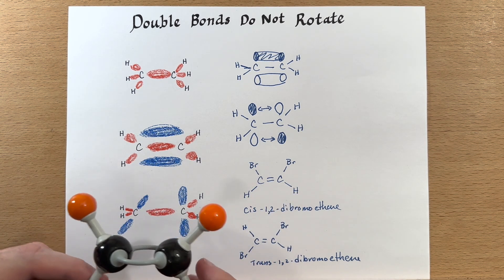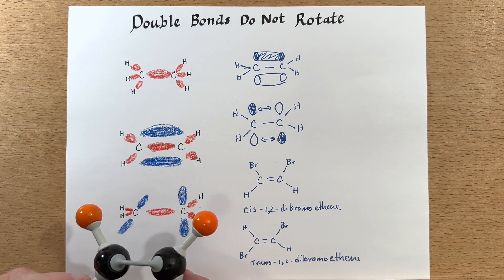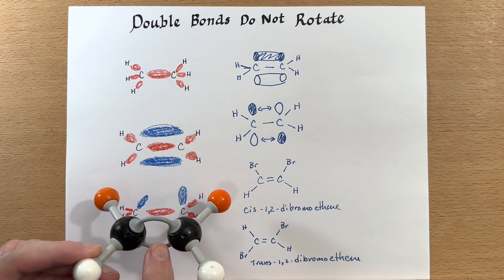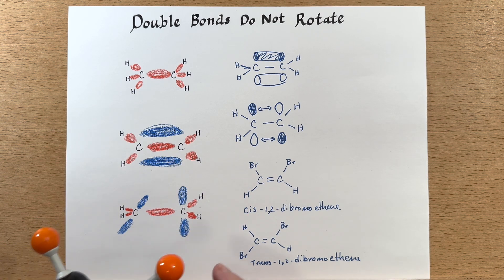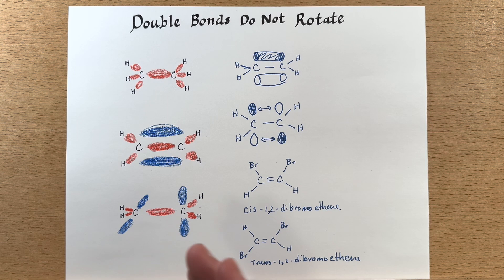Now, both of those configurations happen simply because the double bond is not able to rotate while maintaining the entire bonding character. If we were to rotate them, it would be breaking the bond.